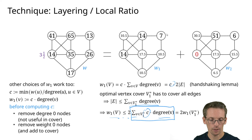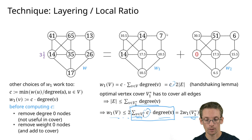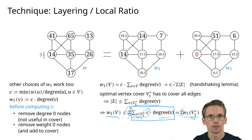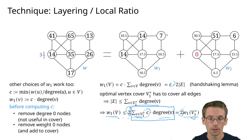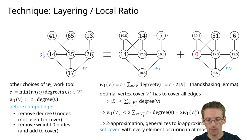The factor 2 appears here, so no matter which vertex cover we take, it's at most a factor of 2 away from the optimal vertex cover for w1. This gives a guaranteed 2-approximation, and the same argument as before applies to conclude a 2-approximation overall.